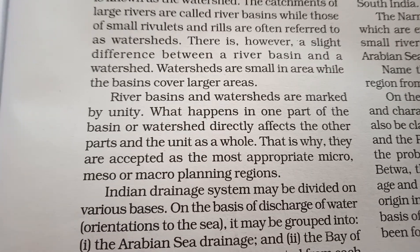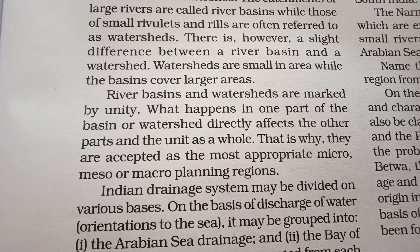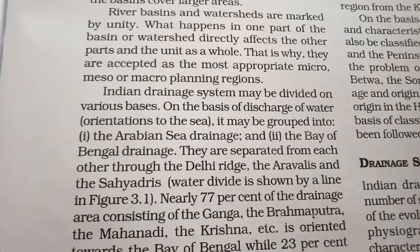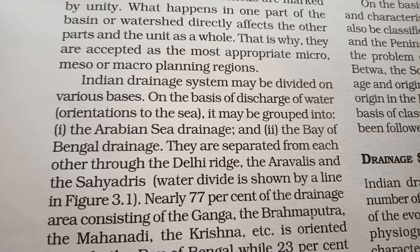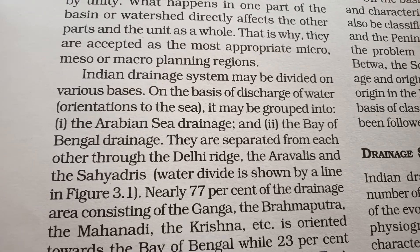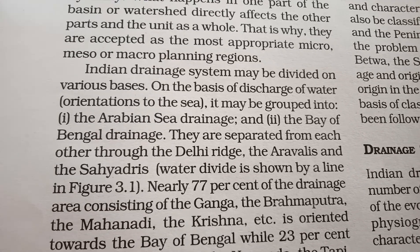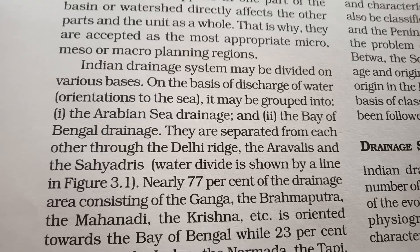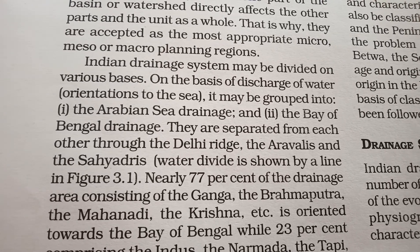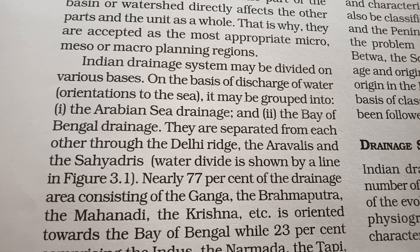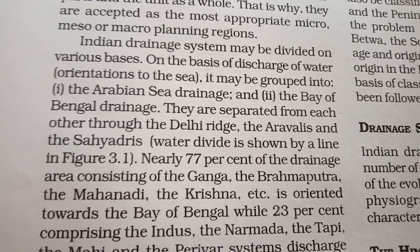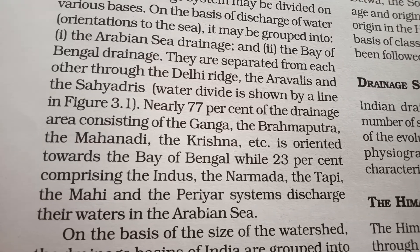That is why they are accepted as the most appropriate units for micro- and macro-level planning. The Indian drainage system is divided into many basins. The discharge of water is grouped into two: one is the drainage of the Arabian Sea, and the other is the Bay of Bengal drainage. They are separated from each other by the Aravalli and the Sahyadri ranges. Nearly 77% of the drainage consists of the Ganga, Brahmaputra, Mahanadi, and Krishna basins.